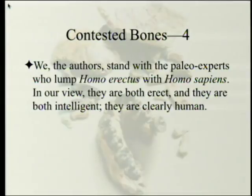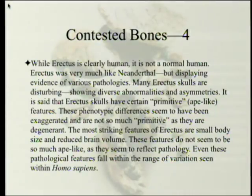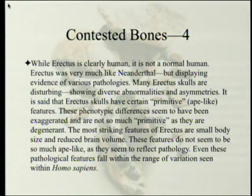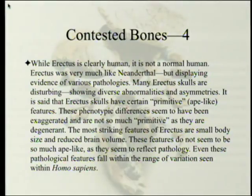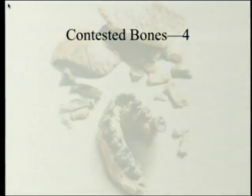The authors stand with the paleo experts who lump Homo erectus with Homo sapiens — they should be in the same species. In their view, both are erect, both are intelligent, and they are clearly human. While erectus is clearly human, it is not a normal human. Many erectus skulls show diverse abnormalities and asymmetries. The so-called primitive or ape-like features seem to have been exaggerated and are not so much primitive as they are degenerate. The most striking features — small body size and reduced brain volume — do not seem to be ape-like so much as they reflect pathology, and even these features fall within the range of variations seen within Homo sapiens.